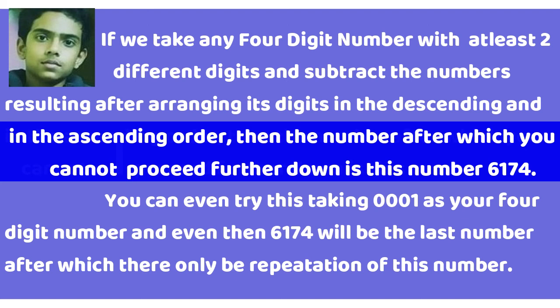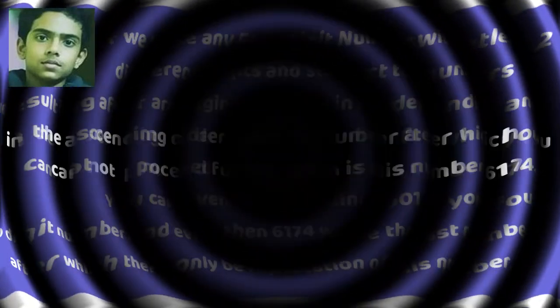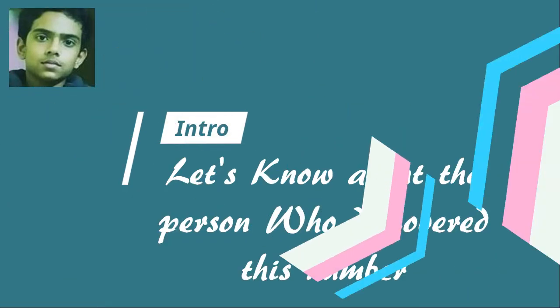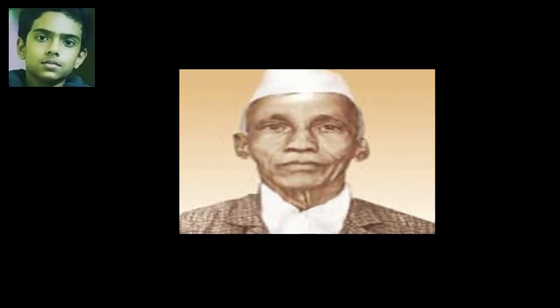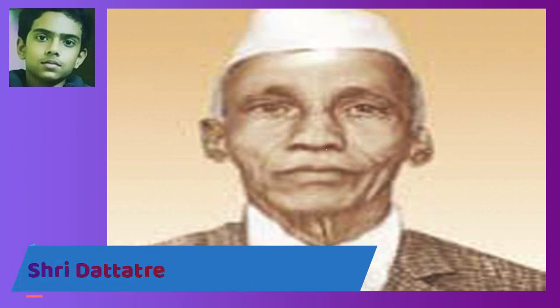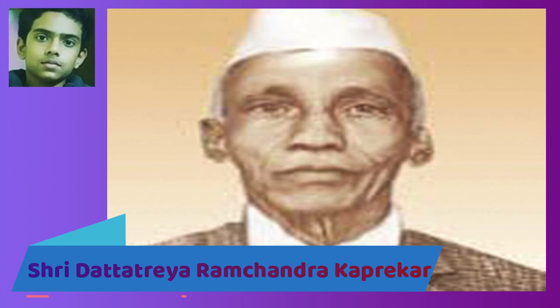Now a short intro of the Indian mathematician who discovered this amazing characteristic of this number. By the name of this number 6174, which is also known as Kaprekar's constant, you can imagine that his surname is Kaprekar and his full name is Dattaraya Ramchandra Kaprekar, who lived from 1905 to 1986.